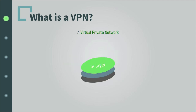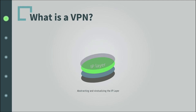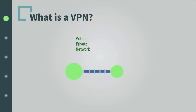We have the IP layer — the whole internet is built on it and resources are accessed publicly. Now, if we obstruct this public layer and use existing protocols to assign virtual network adapters to devices and assign them different IP addresses, we are essentially creating a virtual connection between nodes, and that is a VPN — an apparently physical, securely hidden connection. And that is really cool.